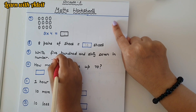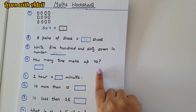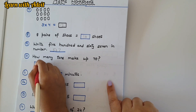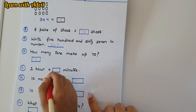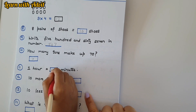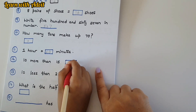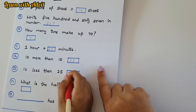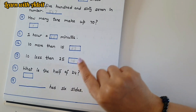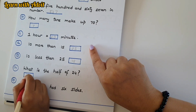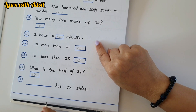Five hundred and sixty-seven — in number form: 567. How many tens make up seventy? Seven. One hour equals how many minutes? Sixty — very good! Ten more than fifteen is twenty-five. Ten less than twenty-five is fifteen. What is half of twenty-four? Twelve. What is the double of thirteen? Double of thirteen is twenty-six — good!